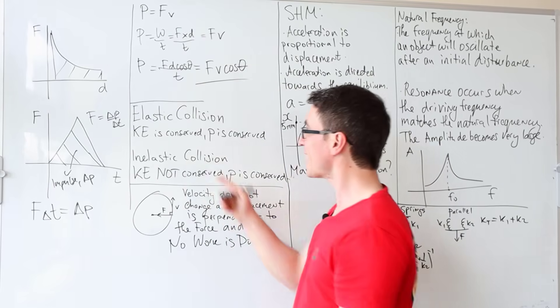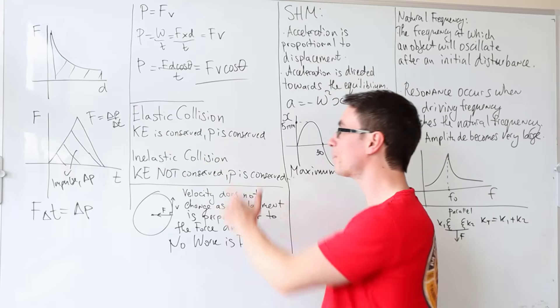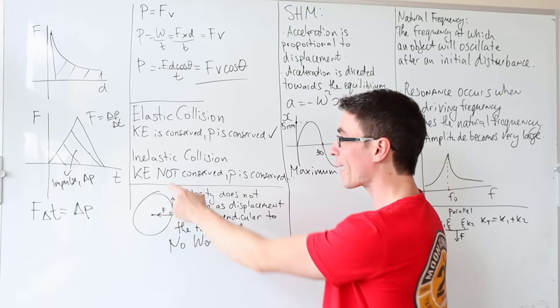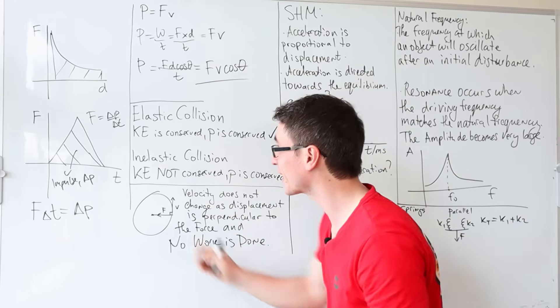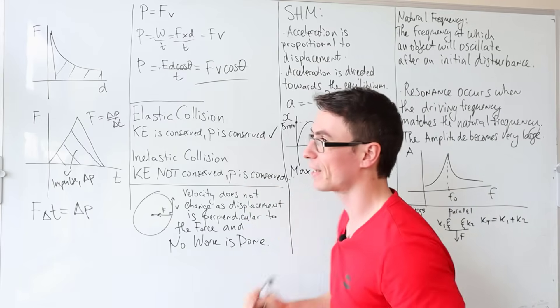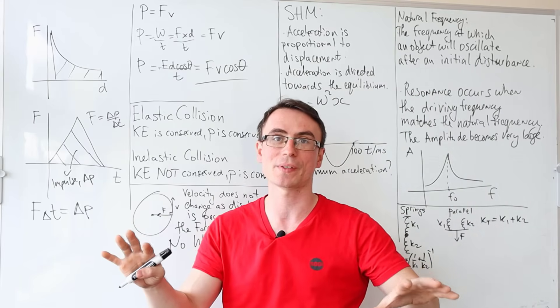In an elastic collision, kinetic energy is conserved, and momentum is conserved. Whereas in an inelastic collision, kinetic energy is not conserved but momentum is conserved. Generally momentum is always conserved.